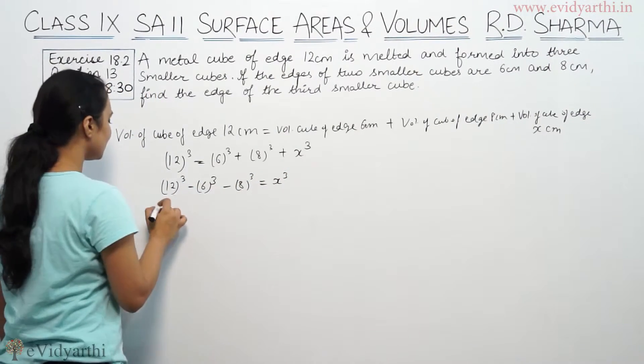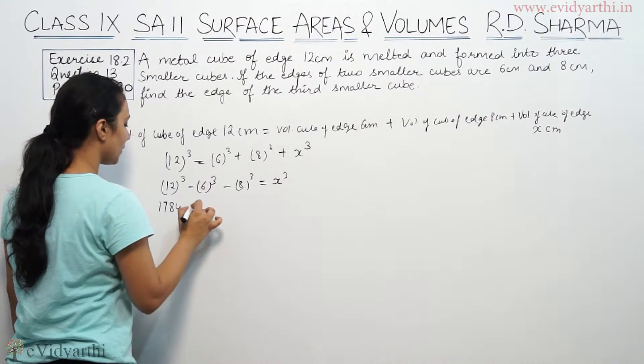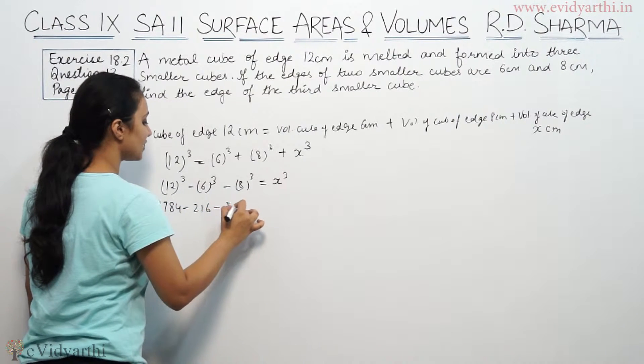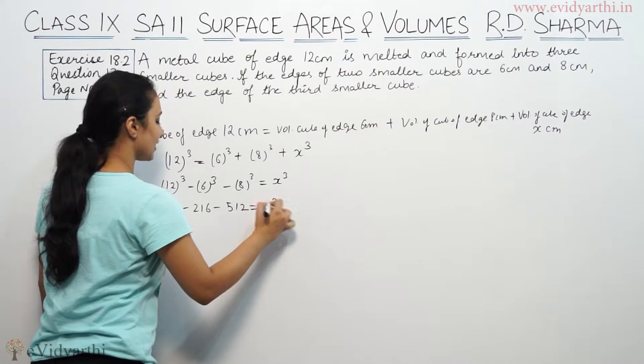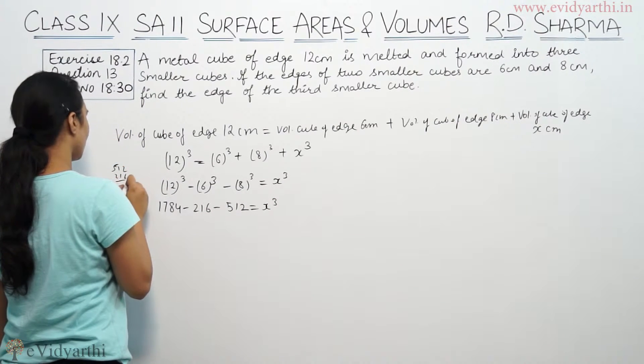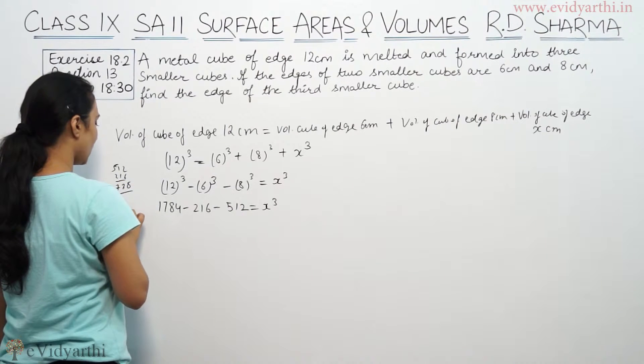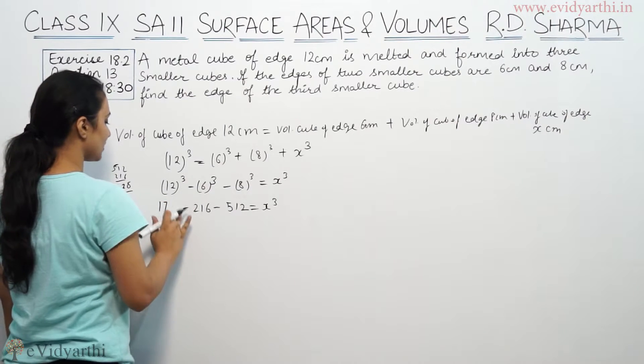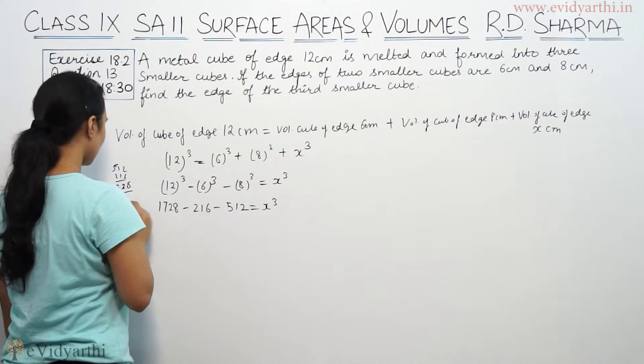So this is 1728 minus 216 minus 512 equals x cube. This is 728. So this is 1728.